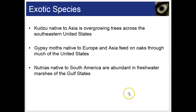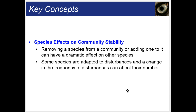Summing up species' effects on community stability: removing a species from a community or adding one to it can have a dramatic effect on other species. Some species are adapted to disturbances, and a change in the frequency of disturbances can affect their numbers.